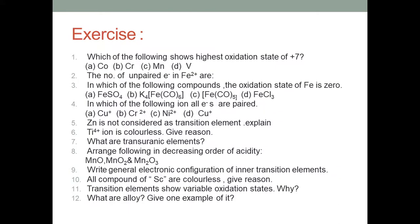Now we have a little exercise here, and I think you must be able to give the answer to all these questions. The first question is: which of the following shows the highest oxidation state of plus seven? Obviously, if you see the table, you can give the answer. That is manganese, which shows plus seven predominantly. Question number two: the number of unpaired electrons in Fe^2+ are? Think about it. Iron has atomic number 26.